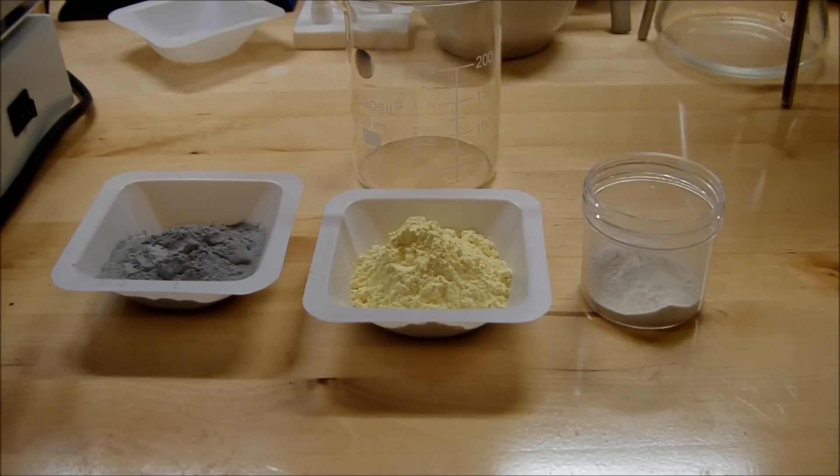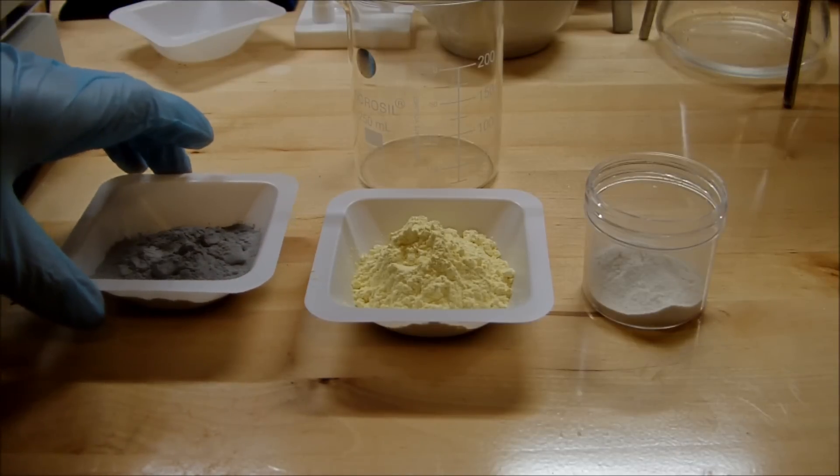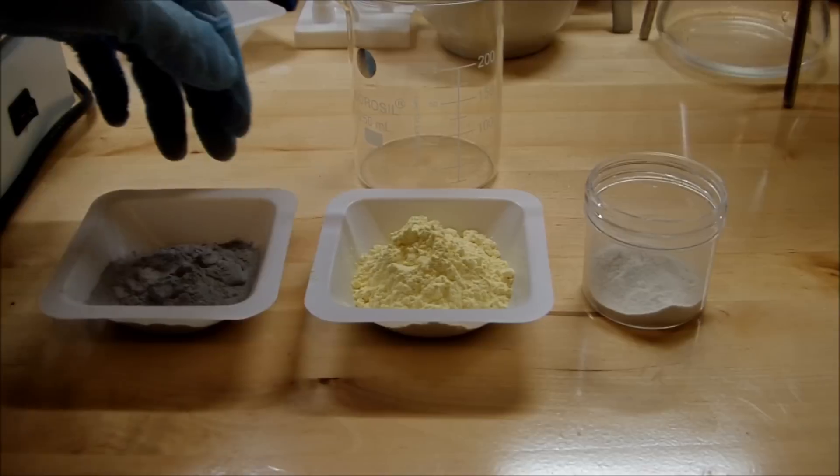So what I've got here is 25 grams of aluminum powder 425 mesh, 30 grams of sulfur powder.